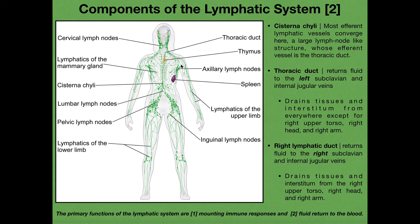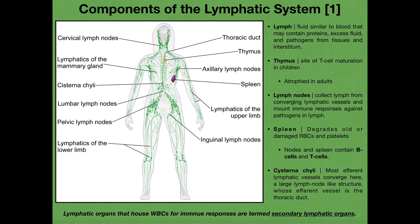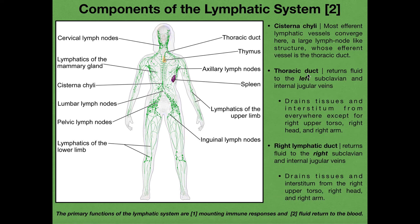There is another duct on the patient's right side called the right lymphatic duct. It plays a similar role except it drains a different side of the body. The right lymphatic duct returns fluid to the right subclavian vein and the right internal jugular vein.